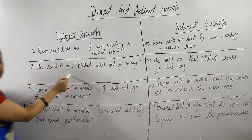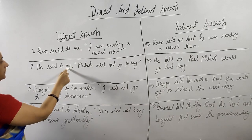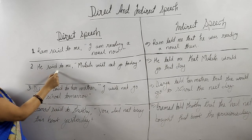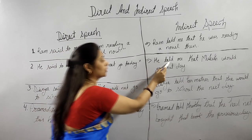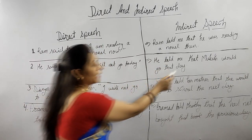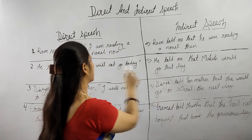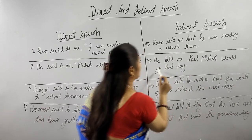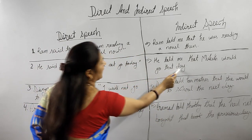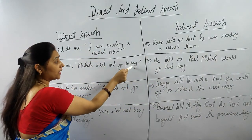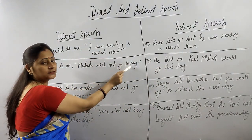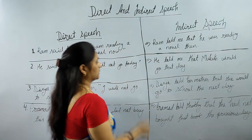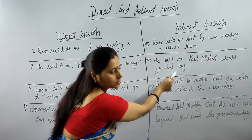Now look at the next example. He said to me, 'Mukesh will not go today.' Again 'said to' will be changed into 'told,' then in place of the comma, 'that' will be put. And as I have told you earlier, 'will' will be changed into 'would.' So: Mukesh would not go — and 'today' will be changed into 'that day.' Today is a word expressing nearness, and the word expressing nearness of direct speech will be changed into a word expressing distance in indirect speech. So 'today' is changed into 'that day.'